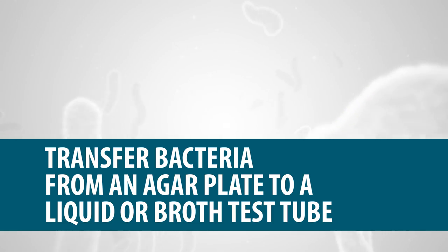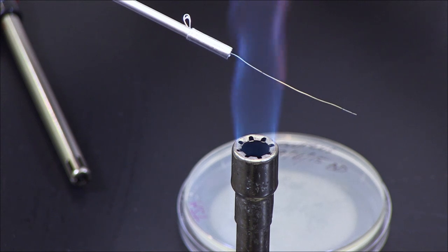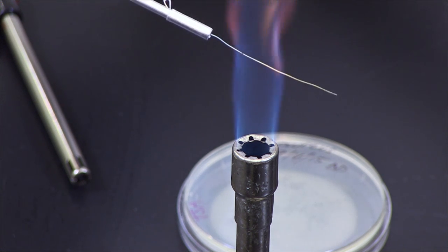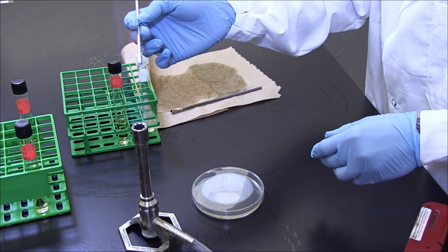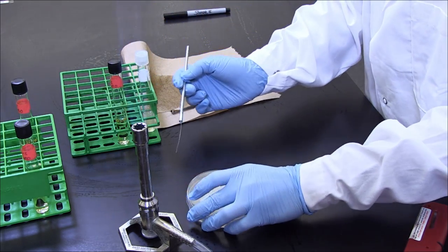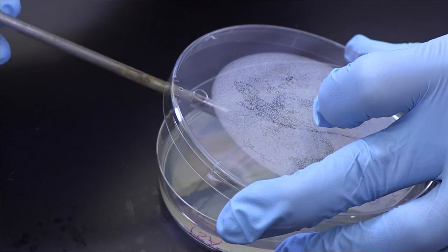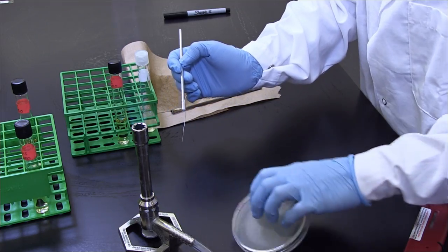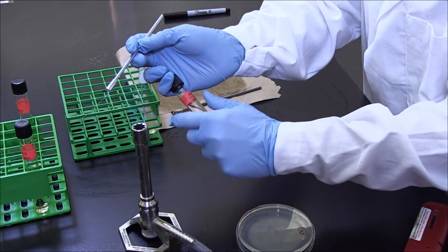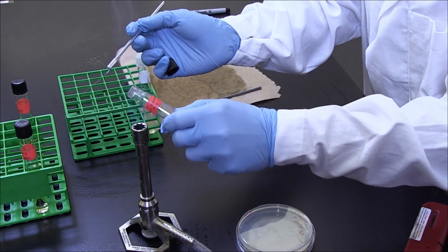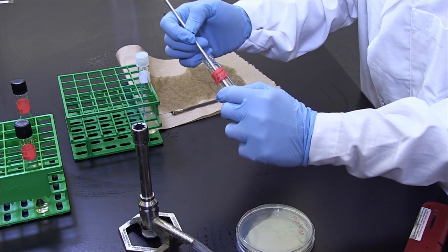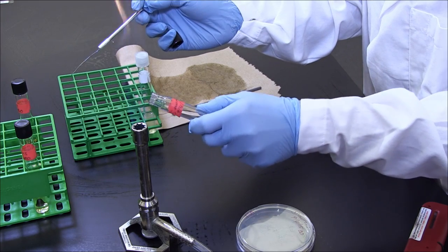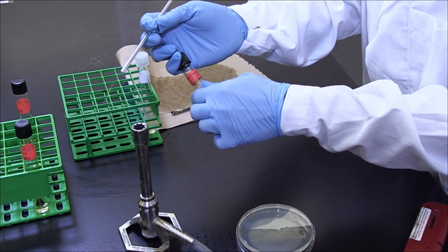Transfer Bacteria from an Agar Plate to a Liquid or Broth Test Tube. Repeat the first few steps from the previous lesson to sterilize the inoculating needle and prevent airborne contaminants with the agar plate. Gently rub the needle over a single colony. Insert the needle into the broth test tube to transfer the bacteria into the liquid. Use the aseptic technique to remove and replace the lid of the broth test tube.